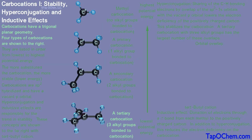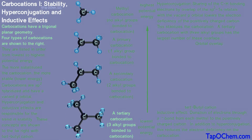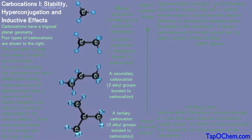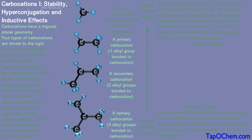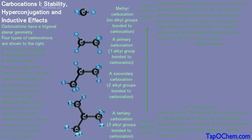A tertiary carbocation has three alkyl groups bonded to the carbocation center. A secondary carbocation has two alkyl groups bonded to the carbocation center, and a primary carbocation has one alkyl group bonded to the carbocation center. A methyl carbocation only has hydrogen atoms bonded to the carbocation center.